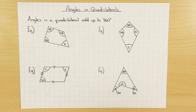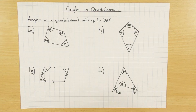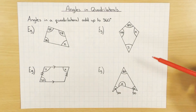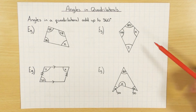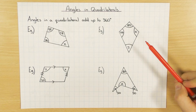Hi guys. In this video we're going to have a look at quadrilaterals and the angles inside them. So the first thing to know is what a quadrilateral is. A quadrilateral is just a four-sided shape. I've got a couple of examples here of four-sided shapes, and they all come under quadrilateral. Easy to remember — quad meaning four.